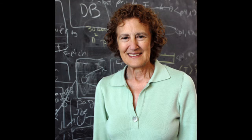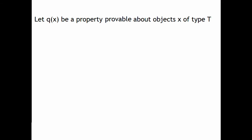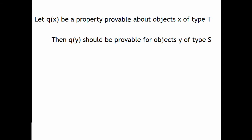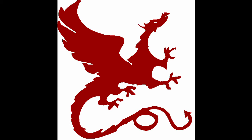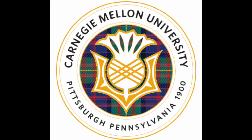In 1994, Liskov formulated this principle in object-oriented programming: Let Q of X be a property provable about objects X of type T. Then Q of Y should be provable for objects Y of type S, where S is a subtype of T. You should recognize, or at least understand, this principle because it gives us inheritance in object-oriented languages and is now known as the Liskov substitution principle. You should also recognize the co-author of the principle, Jeanette Wang, who used to be the head of the computer science department just a few years ago and has been a Carnegie Mellon faculty member since 1985.